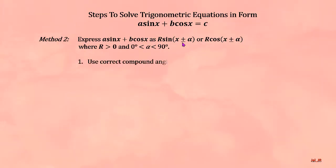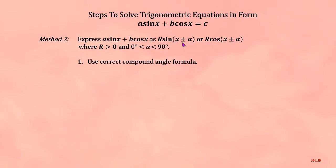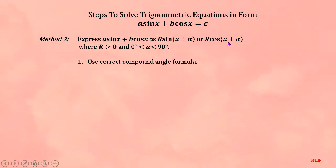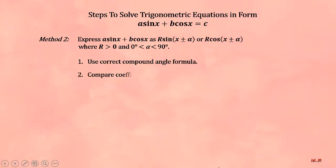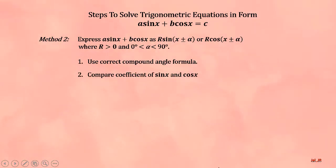First step: use the correct compound angle formula to expand cosine(x ± α) or sine(x ± α). Second step: compare the coefficients of sine(x) and cosine(x) on both sides of the equation to get two equations.